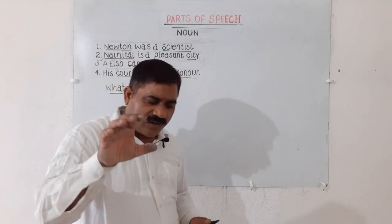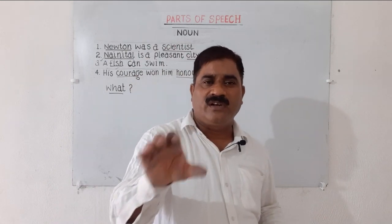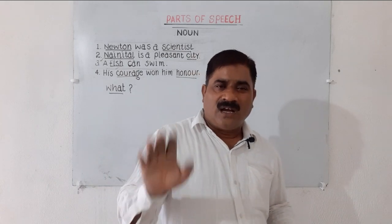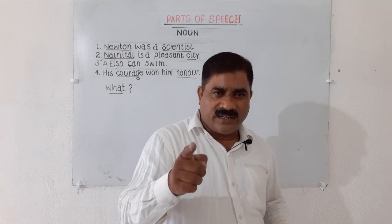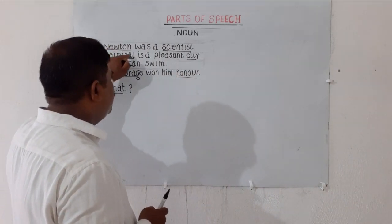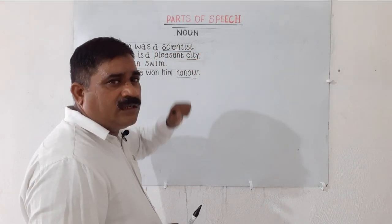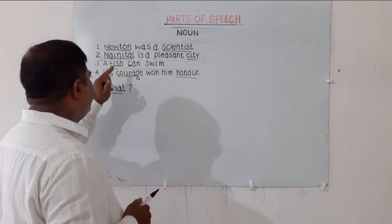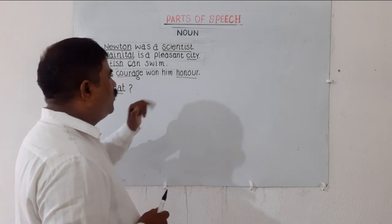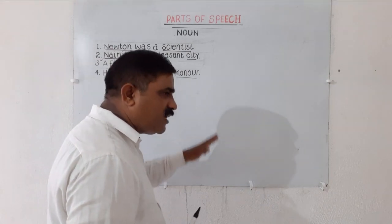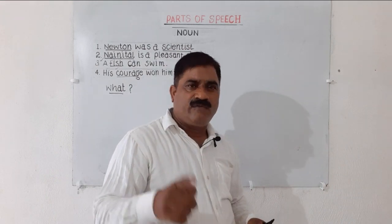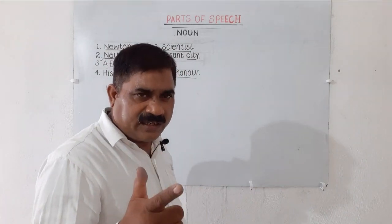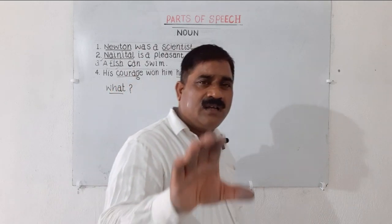This interrogative word 'what' can be applied to find out a noun in most of the sentences, but it can't be applied in all sentences. Let me tell you once again: in sentence one, Newton and scientist are nouns. Nanythal and city are nouns. Fish is a noun. Courage and honor are nouns. So these are the words that stand for person, place, and thing. Are you familiar with the noun?